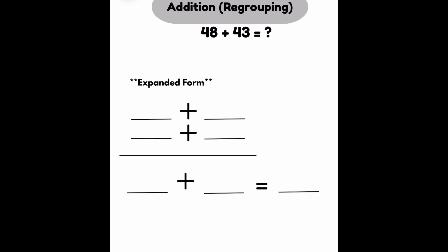Looking at the expanded form of 48 plus 43. I'm going to look at 48. 48 has 4 tens, which means it has 40, and 8 ones. Then looking at 43, 4 tens, which means it's 40, and 3 ones. Then I'm going to add straight down. 40 plus 40 is 80. 8 plus 3 is 11.